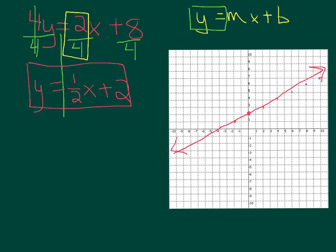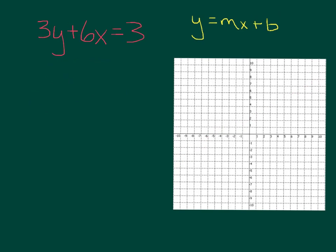Just like the other lesson, but instead of just adding or subtracting, this time we had to divide everything by 4. Now we have 3y + 6x = 3. This is a true two-step equation solving for y = mx + b, because we have to get y by itself, which means we first have to get rid of the 6x.